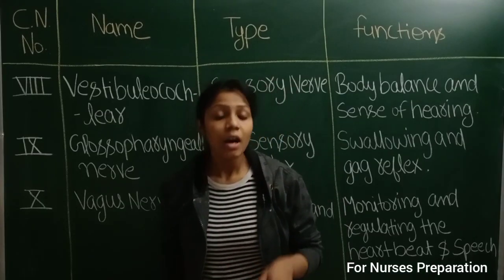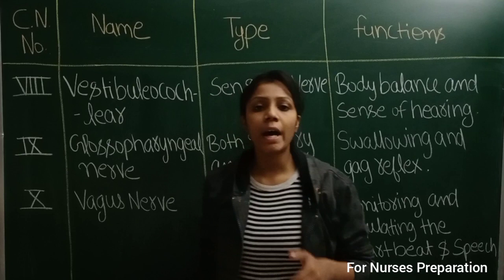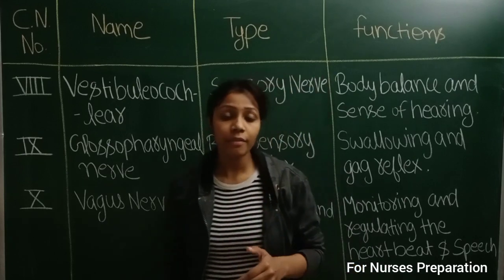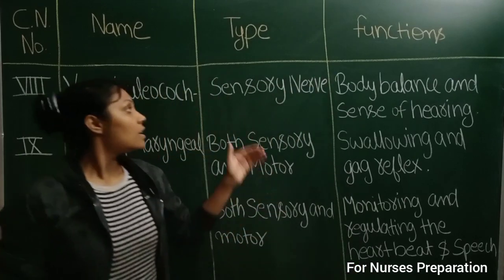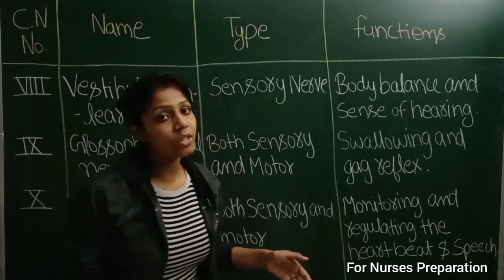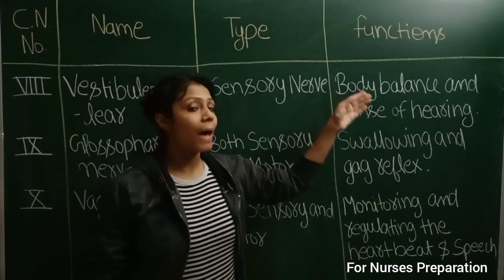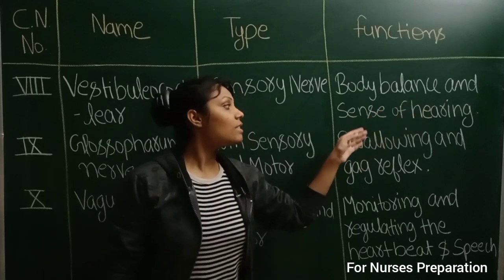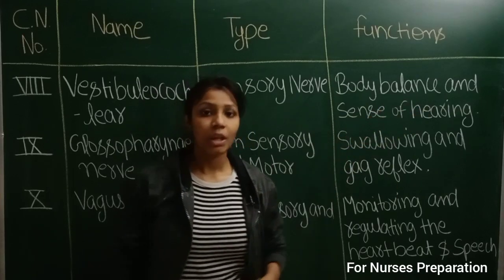Vestibulocochlear is the eighth type of cranial nerve and it's sensory nerve in their type and their functions are body balance and sense of hearing.